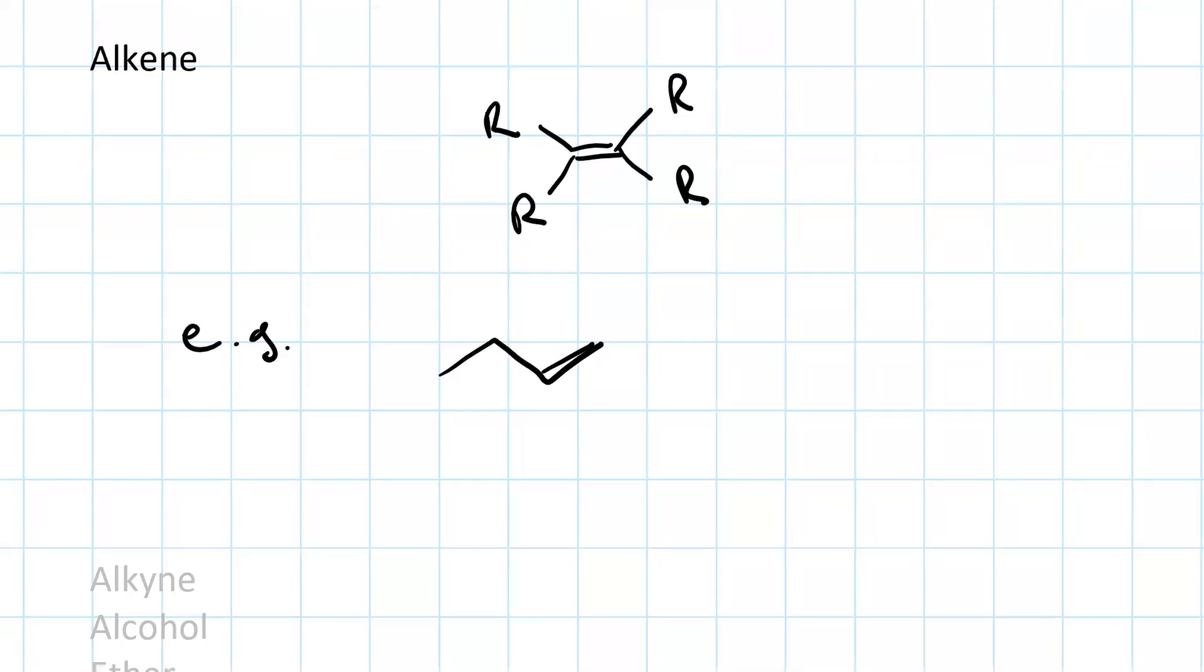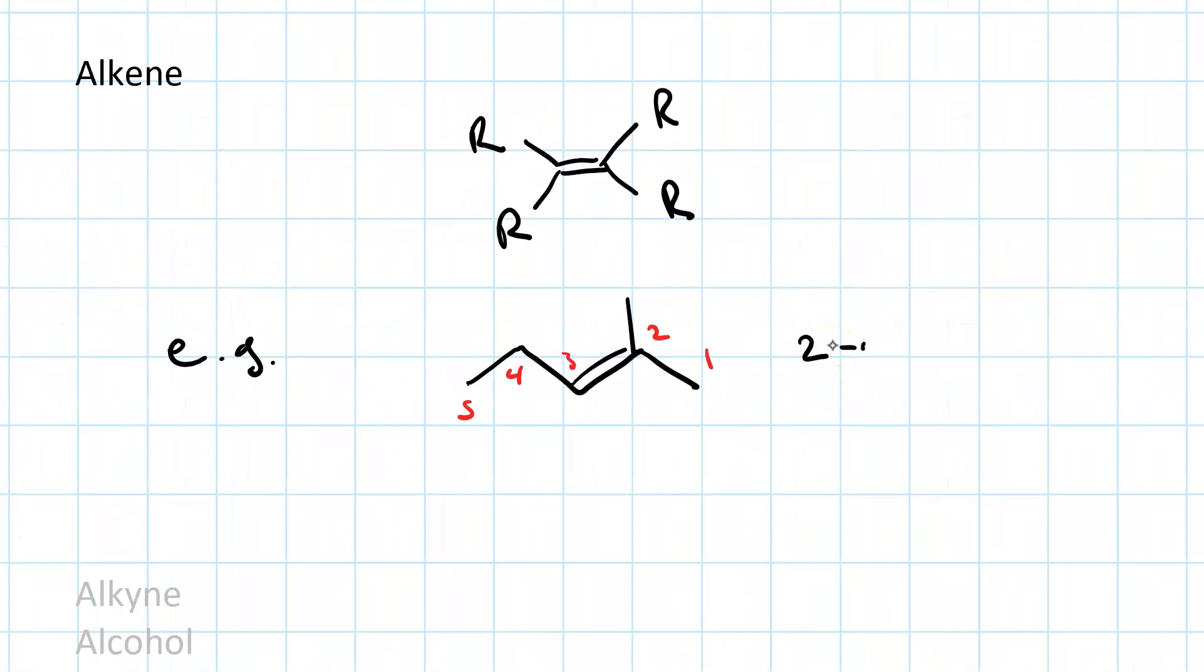An alkene contains a carbon-carbon double bond. So there's your double bond. Let's look at an example. This one is called 2-methylpent-2-ene. And let's do the condensed structure. Carbon 1 is a CH3. Carbon 2 is a C with a side chain of a CH3 on it, double bonded to another C with an H. That's carbon 3. Carbon 4 is a CH2. And carbon 5 is a CH3.